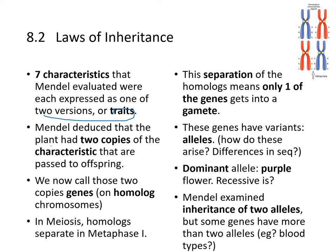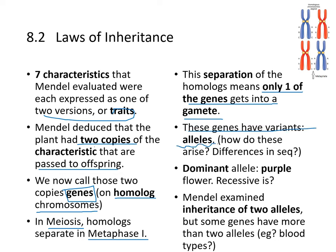Mendel deduced that the plant had two copies of the characteristic passed to offspring — what we now call genes. There are two because they are on homologous chromosomes from our moms and dads. In meiosis, the homologs separate in metaphase I, so only one of the genes gets into the gamete. These genes have variants called alleles, which arise because chromosomes from mom and dad line up precisely at the metaphase plate — copies of genes on separate chromosomes are what we call alleles.